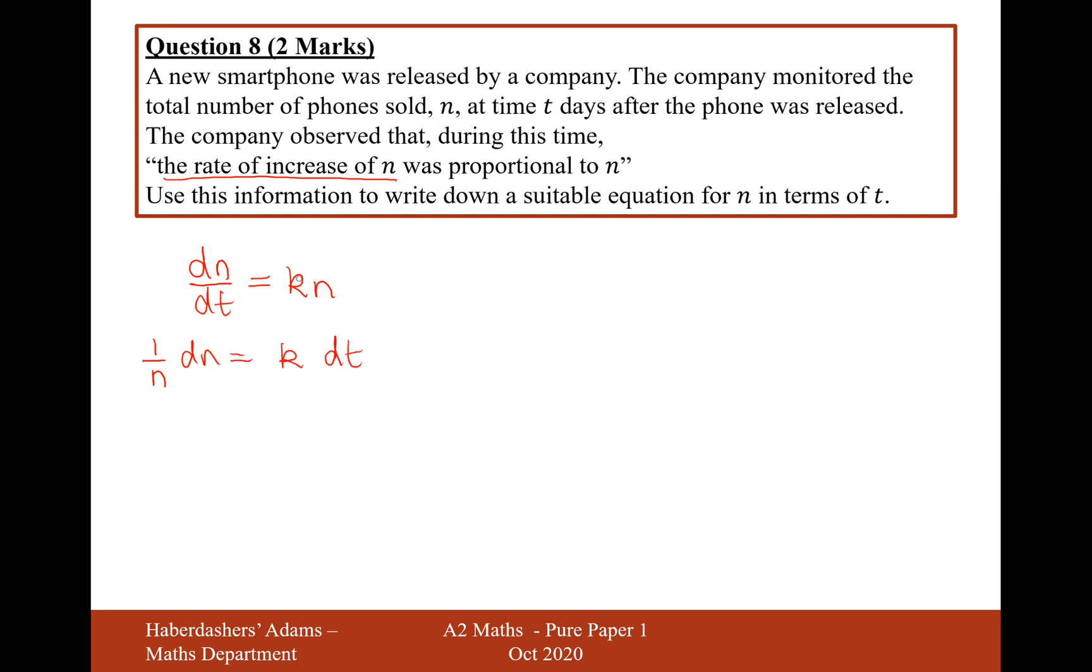So k is just a number, that's the scale factor proportion number, so we've left it there. We've divided by the n onto the other side and we've times the dt on the other side as well. So now we'll integrate both sides. So it's therefore going to be ln n = kt + c.